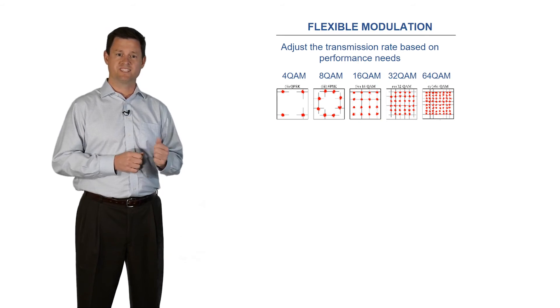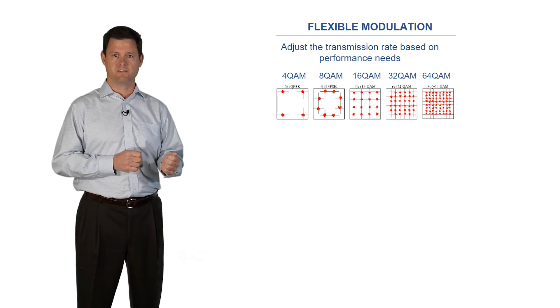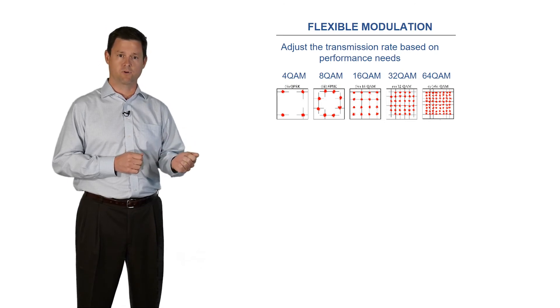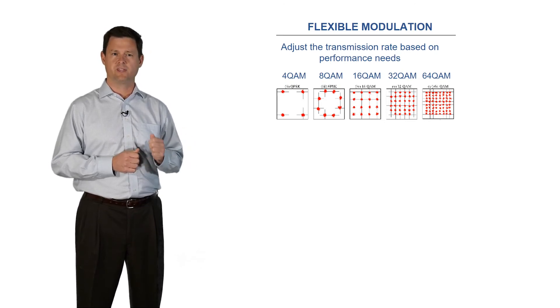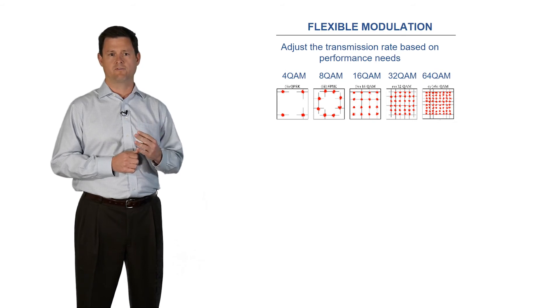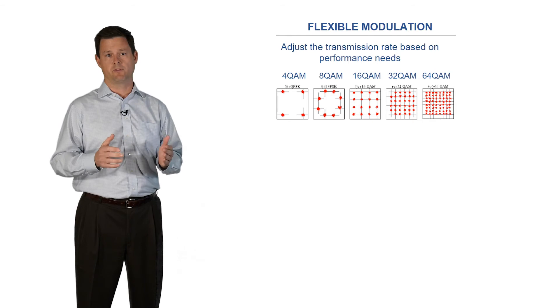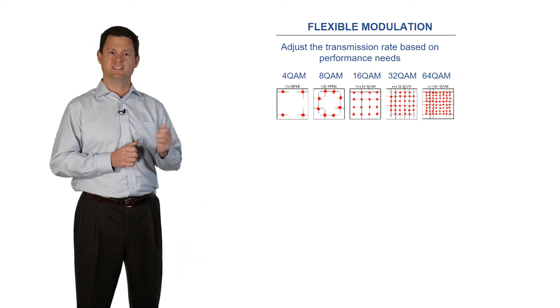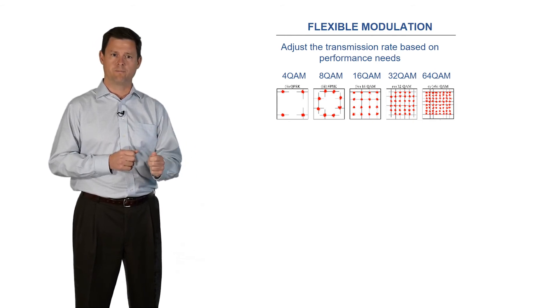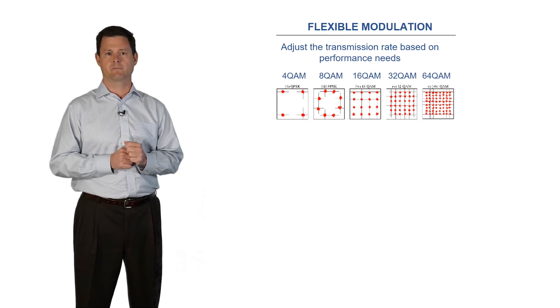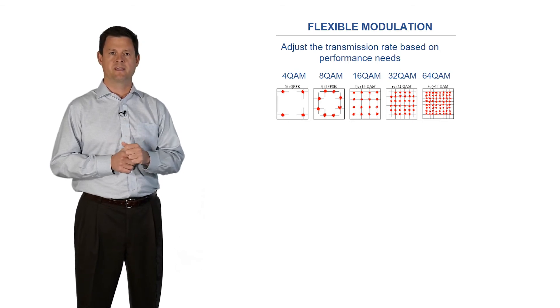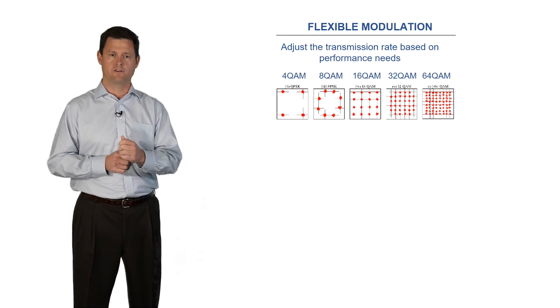A signal with 16 states is called 16-QAM. 64 states, 64-QAM. Each time we increase the number of states by a factor of four, we double the amount of bits per symbol, and hence, double the throughput of the signal. 16-QAM provides four bits per symbol and 200 gig of throughput. 64-QAM provides eight bits per symbol and 400 gig throughput.